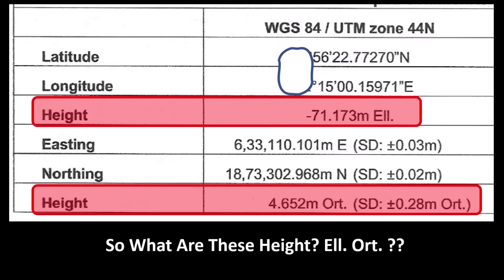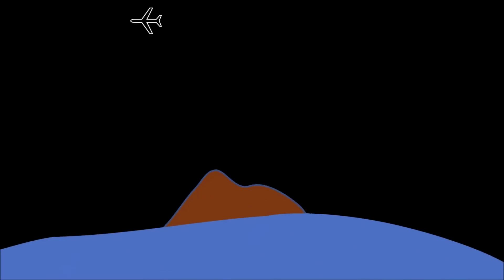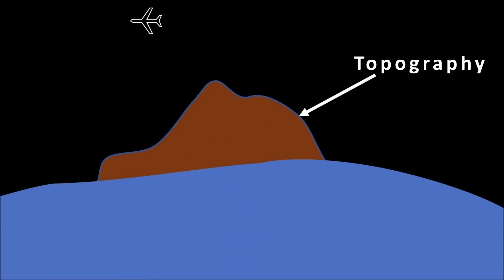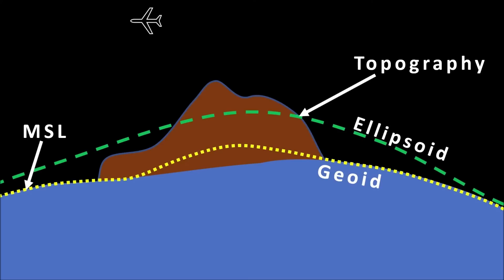So what are these heights, ellipsoid and ortho? This is the topographic surface and this is mean sea level. The yellow dotted line is the geoid which matches closely with the mean sea level, and the green dotted line is the ellipsoid. And you are standing on top of a mountain. So the question is, what is your height and from where do you actually measure your height?